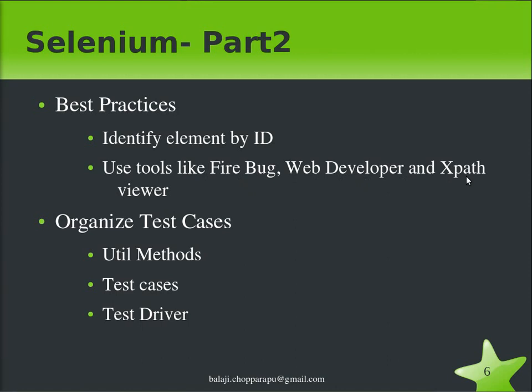In most cases while automating you should have utility methods: a 'LoginUtil' which automates only the login test cases, and a 'HomePageUtil' which automates only the home page test cases. These util methods should run independently. Then you have wrapper test cases which call the login and home page test cases, allowing you to combine them into a test suite. A test driver — an XML or small text file — declares and executes the test cases, calling the relevant methods.